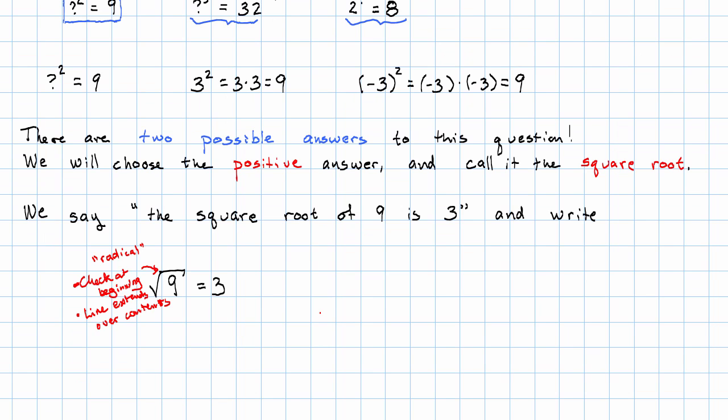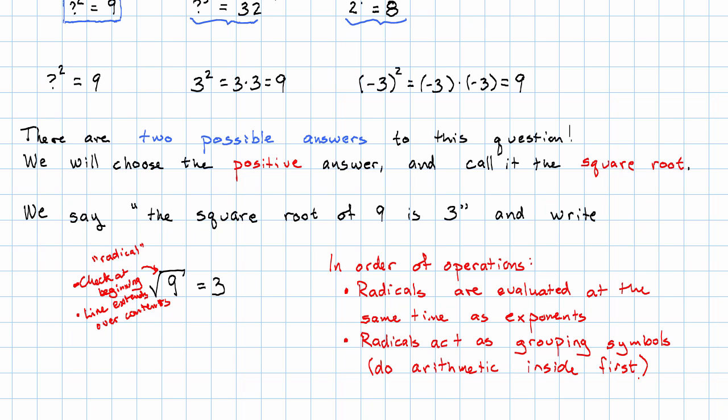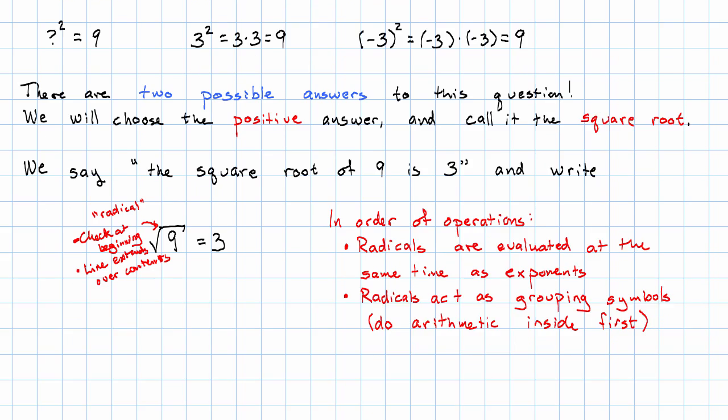If we have multiple operations, radicals are evaluated at the same time as exponents. And radicals act as grouping symbols. That means we have to do any arithmetic inside them first.